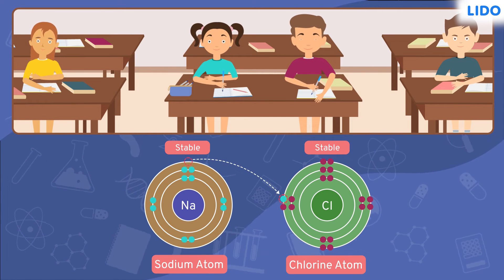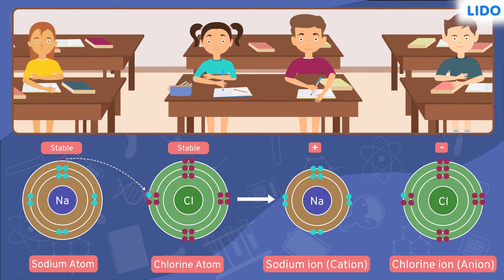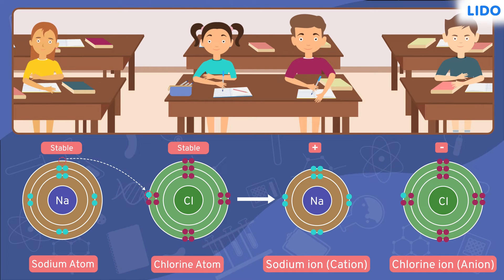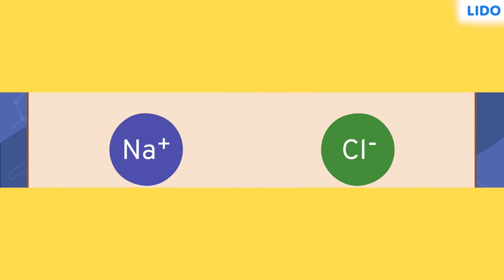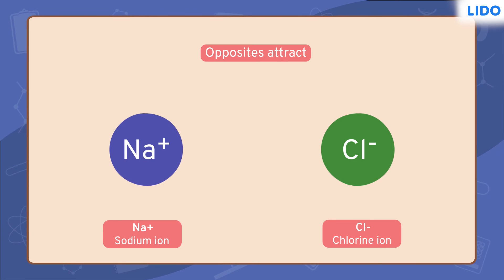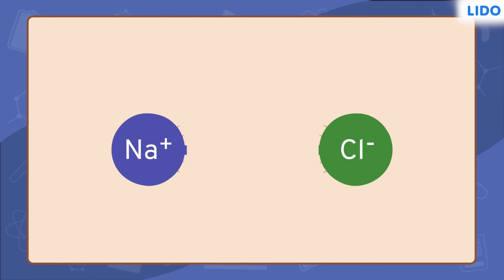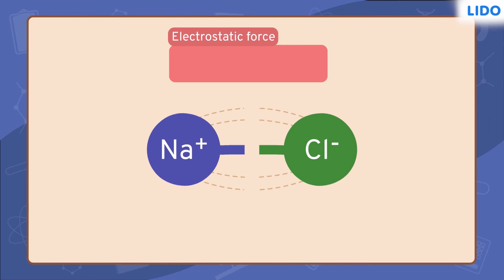Sodium, due to loss of an electron, becomes positively charged, and chlorine, due to the gain of an electron, becomes negatively charged. You must be wondering that now both the atoms are stable — but where is the bond? We know that opposites attract. So a positively charged sodium ion gets attracted to the negatively charged chloride ion. This is called electrostatic force of attraction.